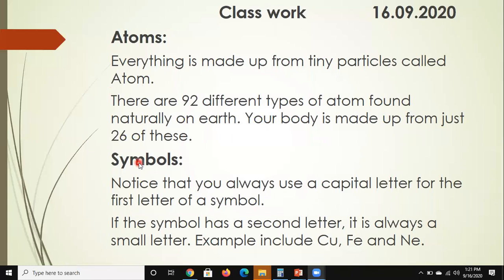This topic everyone is familiar with from earlier grades. Let's start. Atoms: Everything is made up from tiny particles called atoms. There are 92 different types of atoms found naturally on earth. Your body is made up from just 26 of these.